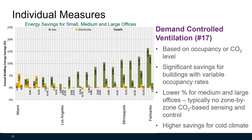Another measure is demand controlled ventilation. It can be based on occupancy sensors, window switches, or CO2 level. When there is no occupant in a space, the temperature of that zone will be reset and the airflow will be controlled at the minimum level. This strategy could have significant savings for buildings with variable occupancy rates. Energy savings will be lower for medium and large offices because there is typically no zone-by-zone CO2-based sensing and control. Higher savings can be achieved in cold climates.